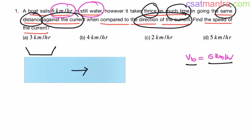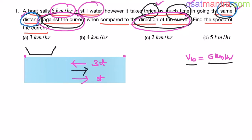Say the boat is travelling from one point to another. Going against the current means travelling opposite to the river flow. When going in the direction of the current, the boat takes time T. When going against the current, it takes thrice as much time — 3T. It's travelling the same distance in both cases.